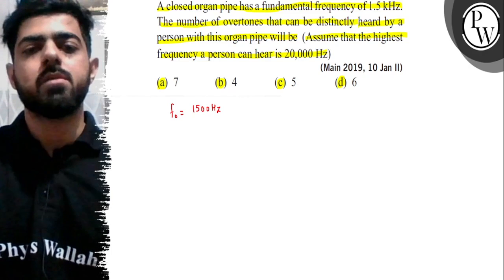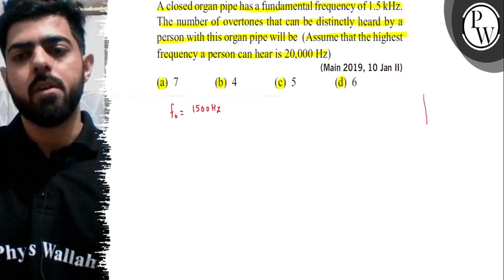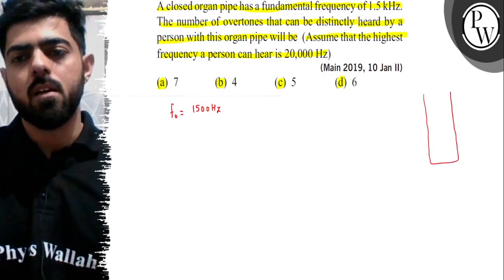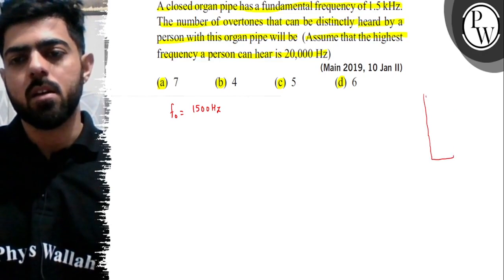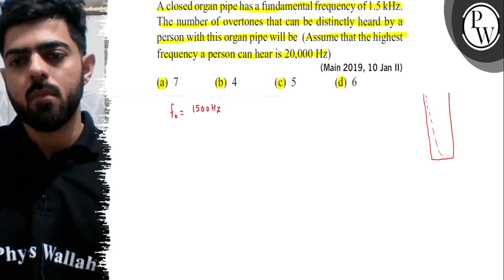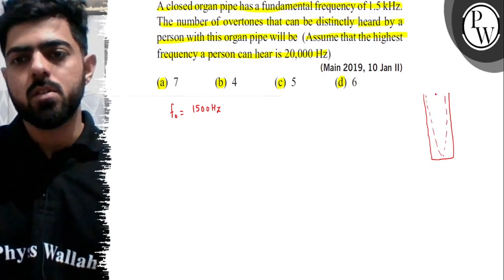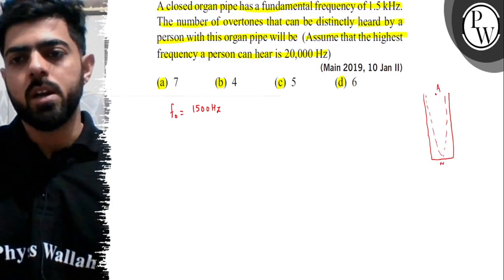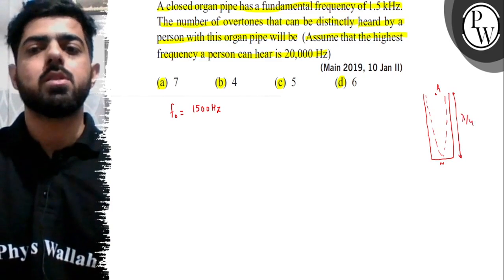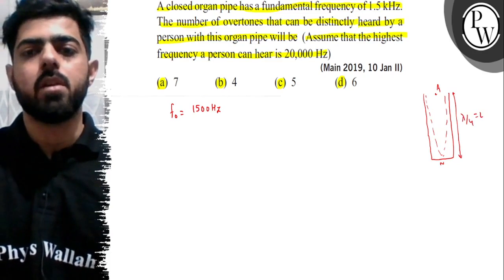If we draw the scenario for a closed pipe, we know the first fundamental frequency occurs with an antinode and node forming. The distance between them is λ/4, so the length will be equal to λ/4.